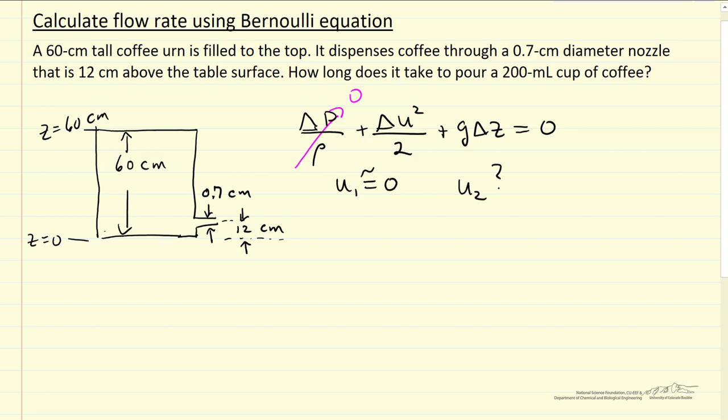We're trying to solve for U2. So this equation, Bernoulli's equation becomes U2 squared over two minus U1 squared over two, but of course we said that's zero, plus G, Z2 minus Z1 equals zero.